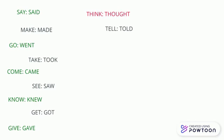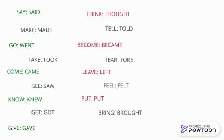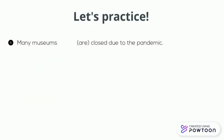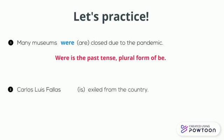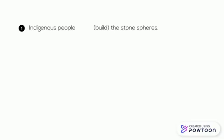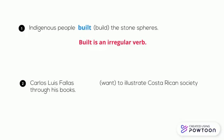This is a list of all the irregular verbs that you must learn in order to use past tense. Many museums are closed due to a pandemic would be were closed, since were is the past tense plural form of be. Carlos Luis Fallas is exiled from the country would be was, since was is the past tense singular form of be. Indigenous people build the stone spheres would be built — built is an irregular verb. Carlos Luis Fallas want to illustrate Costa Rican society would be wanted, which is a regular verb.